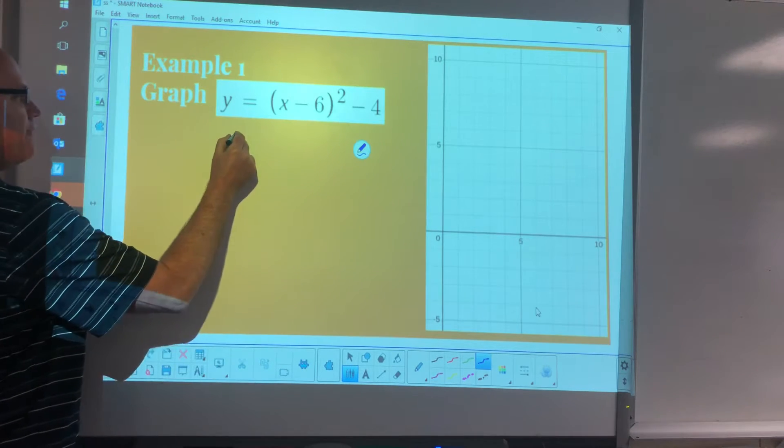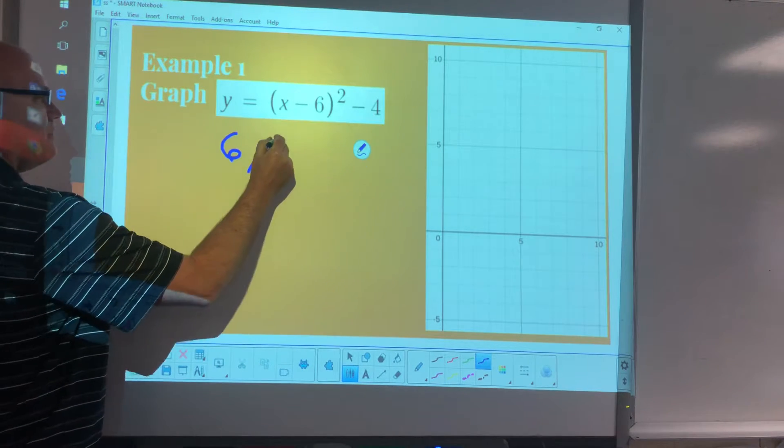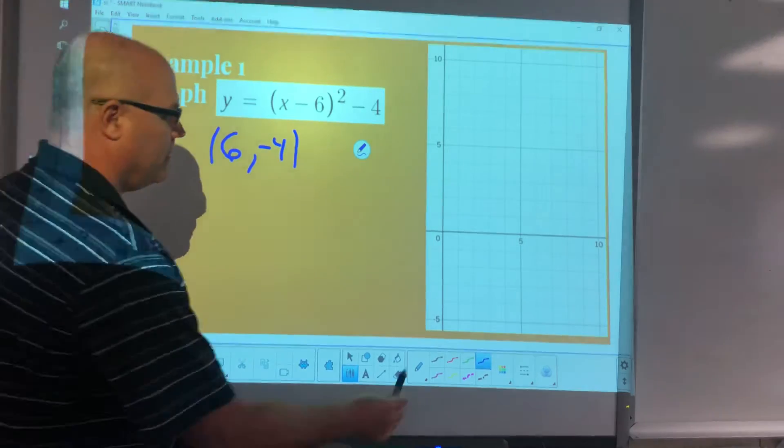So our vertex is at the point 6 comma negative 4. So let's plot that point. I go over 6, down 1, 2, 3, 4. There's my vertex.